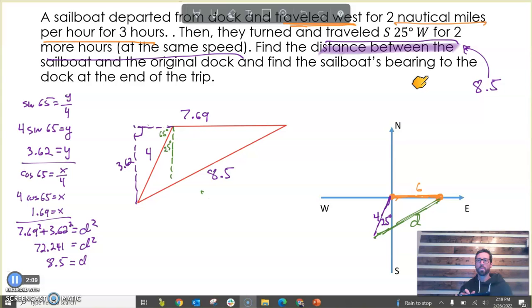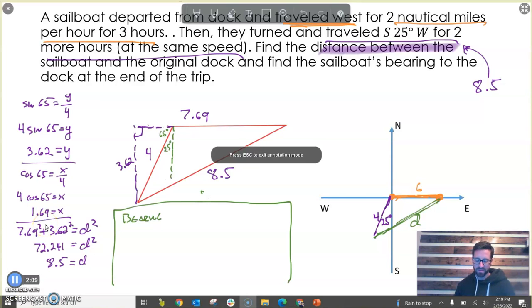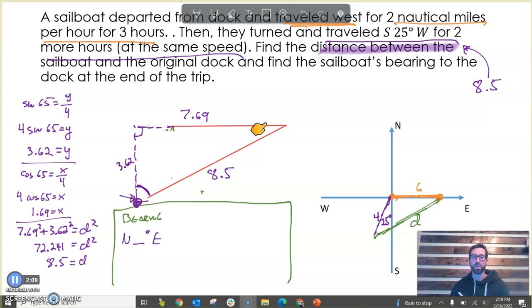Now our next question says, find the sailboat's bearing to the dock at the end of the trip. So I'll do this part in green, and we'll kind of work this part out down here. This is where we'll find the bearing. Now, what I know is in my little right triangle here, I'm going to find some angles. I'm going to find some angles. And so if I'm looking at this, I don't really at this point care about any of this information in here. So I'm just going to kind of erase it. Because what we know, if my little boat's here, the bearing is the angle off of the north-south line. So it's going to be north something degrees east. We know that's what our bearing is going to be, because it's the bearing from the boat back to the dock where it started.